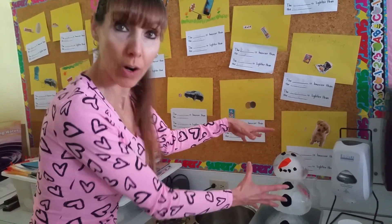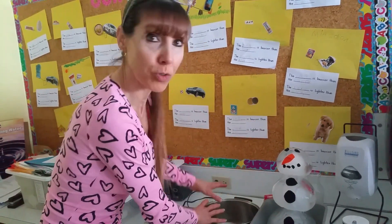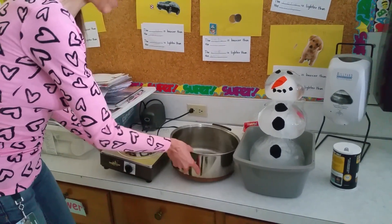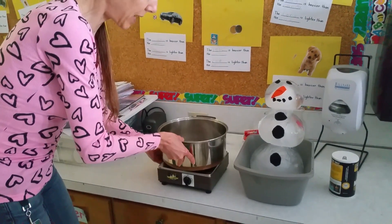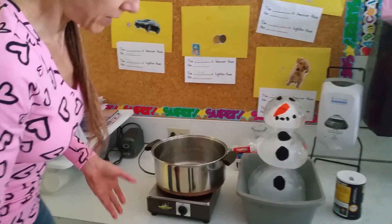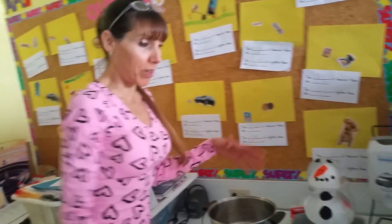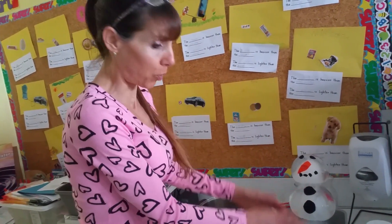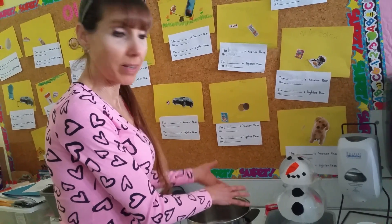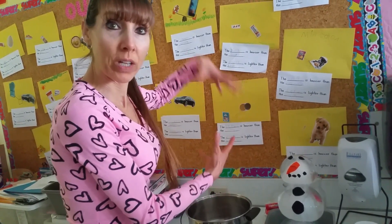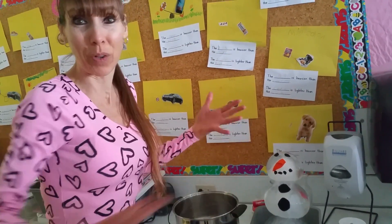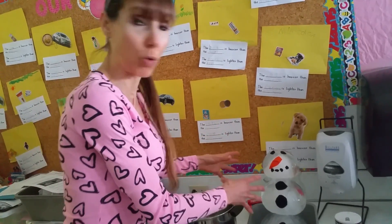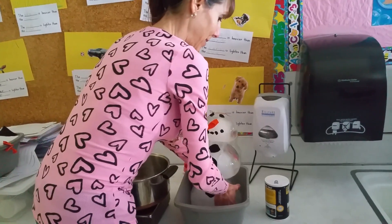We're going to take our Olaf and move it into a pan on high heat. If you're at home and you're going to do this with your children, you can just let it melt until it's totally gone and then pour the water into a pan and boil it so you can get to the gas state. But because you only have so many hours in a school day, you do have to expedite it. So now we're going to move our Olaf.